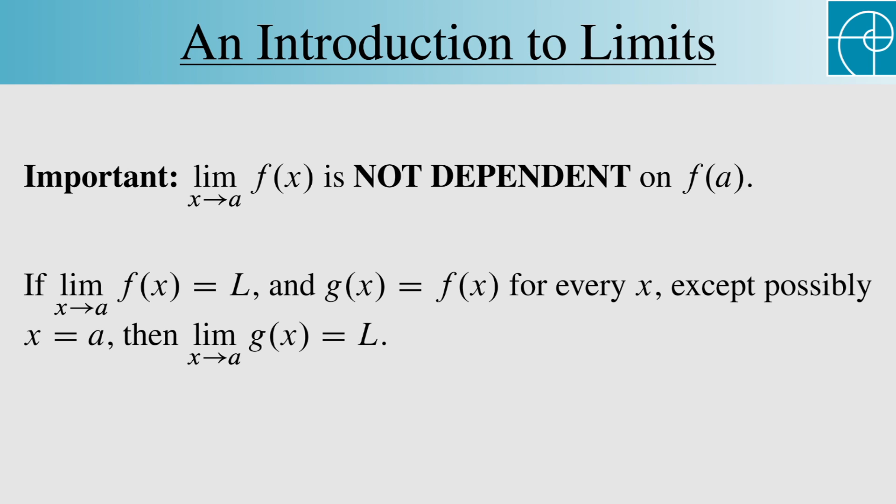Formally, we just said that if the limit as x approaches a of f is L, and f and g are equal everywhere except possibly at a, then g has the same limit at a.